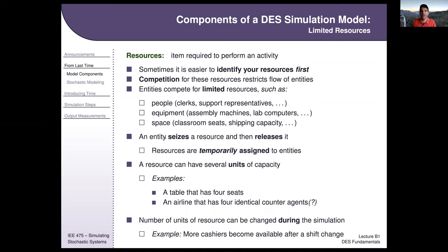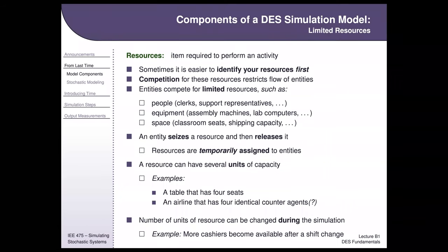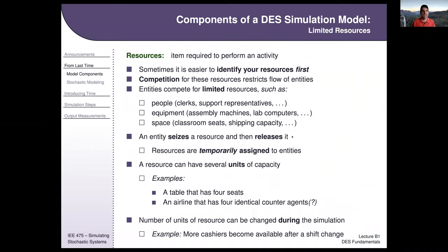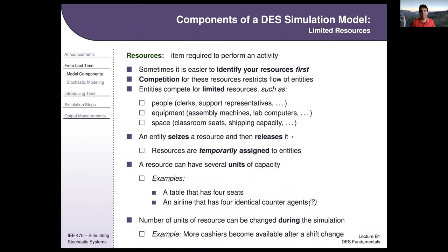What's nice about resource capacity is that we can change it during a simulation. For example, simulating a bank where different times of day have one clerk or five clerks: we can have a clerk resource and schedule the capacity to automatically change from one to five as needed. Are there any questions about entities, attributes, and resources, and how these things differ?